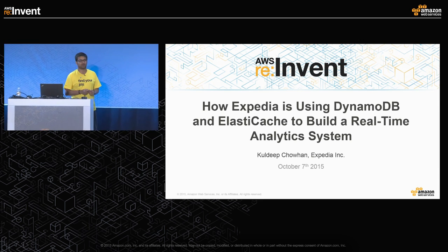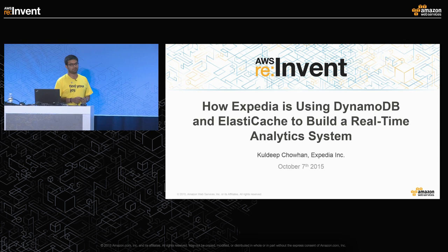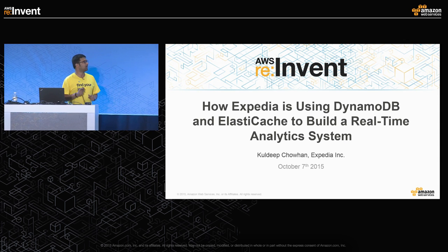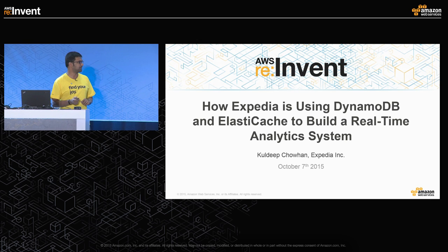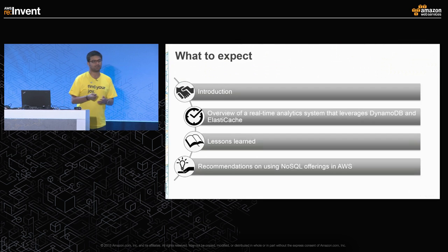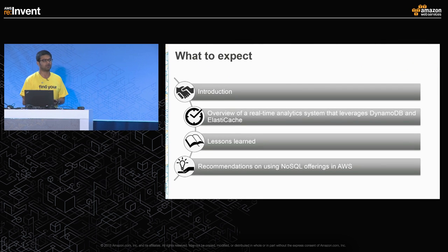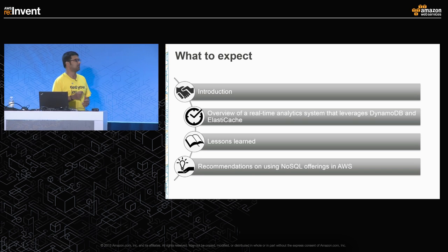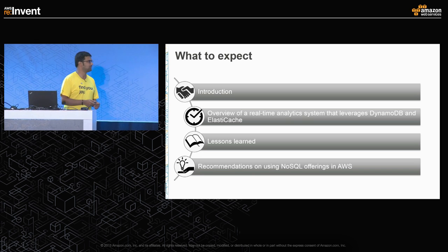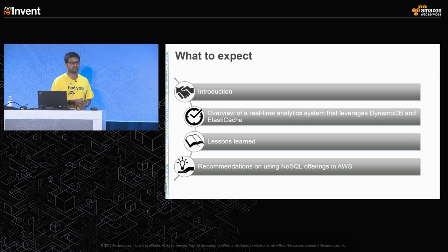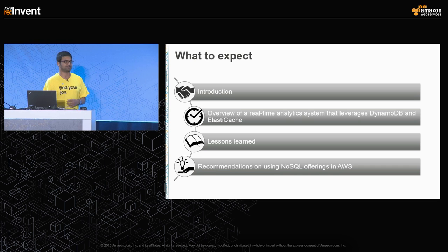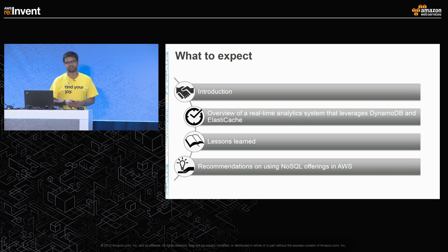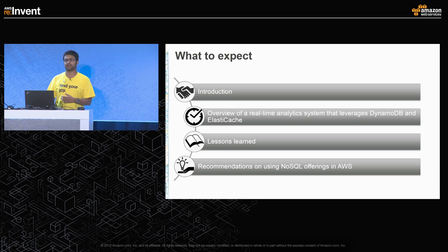Thanks, Dan. Good afternoon, everyone. I'm Kuldeep Chauhan from Expedia. I'm here to talk about how Expedia uses DynamoDB and ElastiCache for a real-time application. In this session I'll go through an overview of what Expedia does in AWS, talk about the real-time analytic application, what the initial design decisions were, what challenges we faced after running for some time, how we redesigned the application, and some recommendations for folks running DynamoDB and ElastiCache.